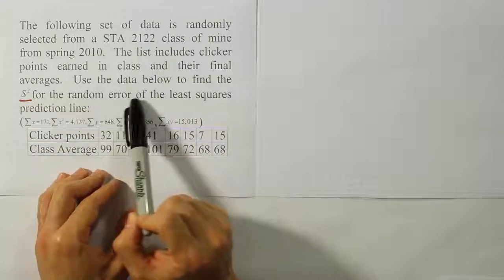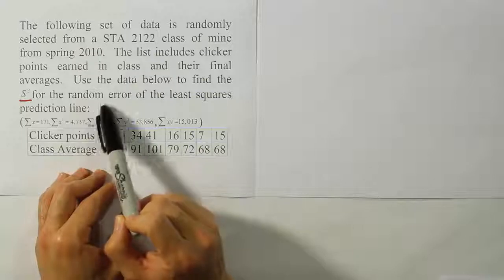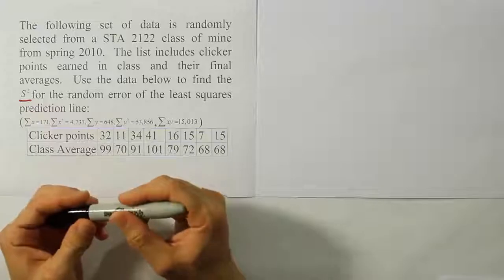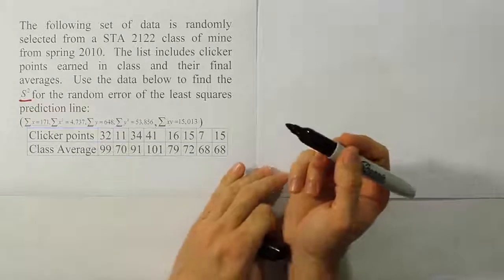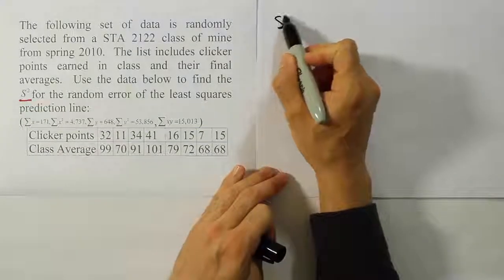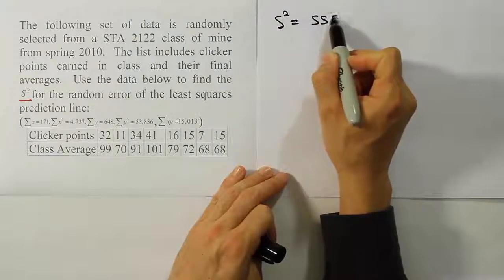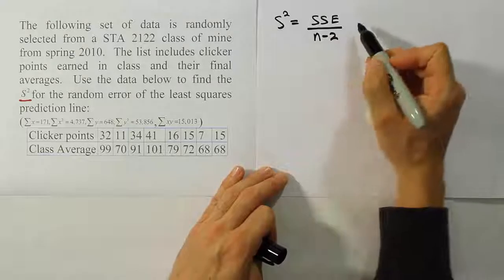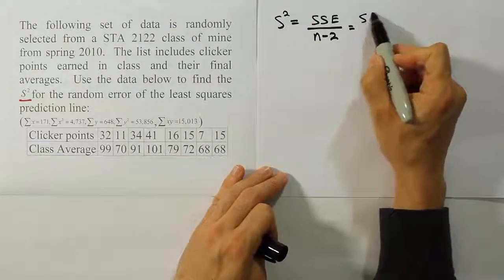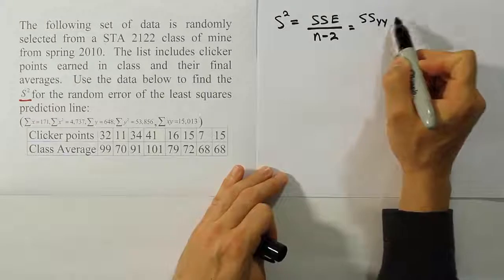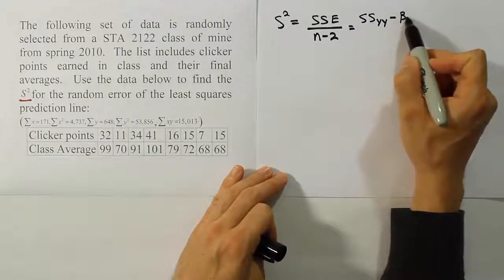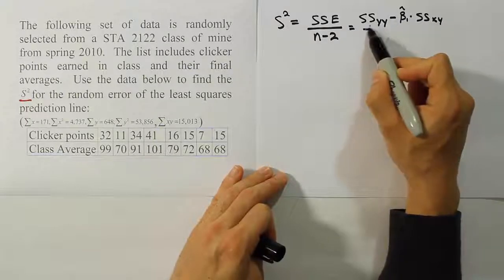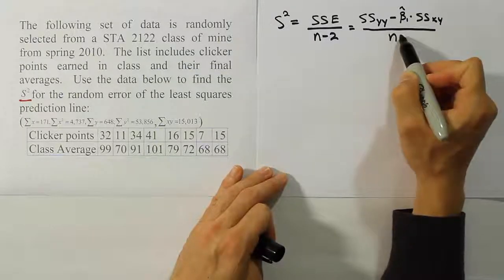So we're looking for the variance for the random error of the least squares prediction line. This is the random error term E, and we're looking for its variance. The formula for doing that is we need to calculate S squared by calculating SSE over N minus 2, where SSE equals SSYY minus beta 1 hat times SSXY.